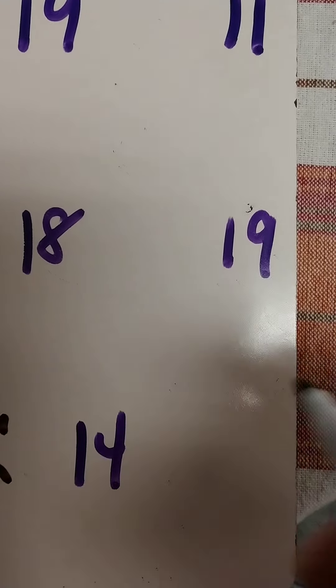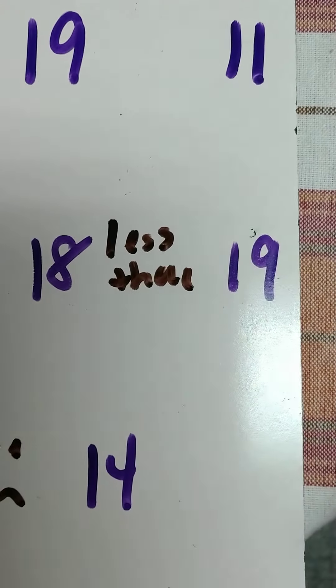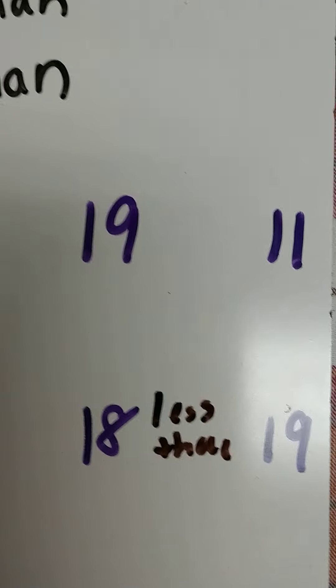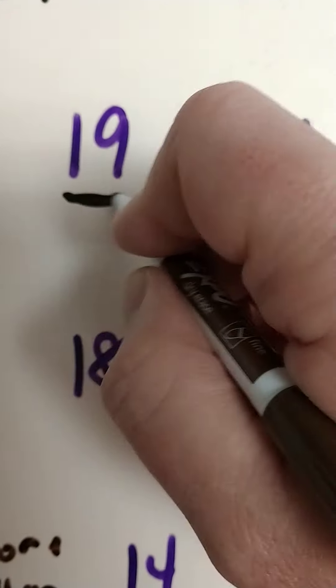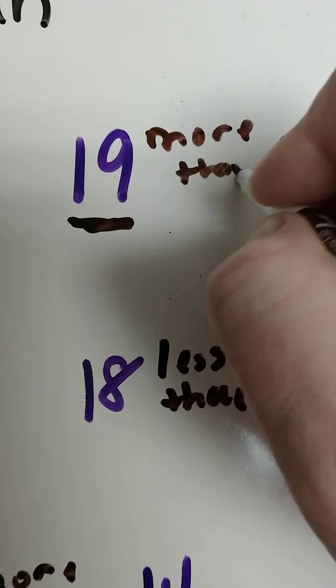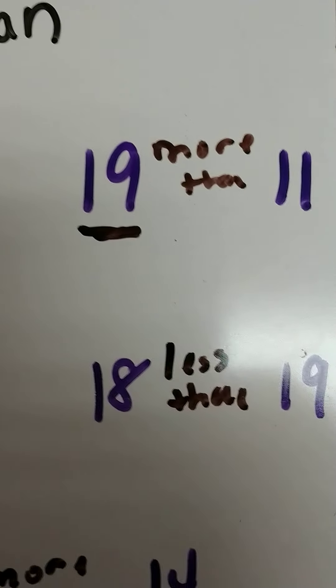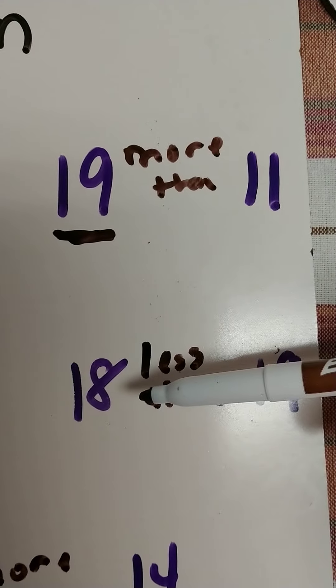18 and 19. 18 is the smaller number, so 18 is less than 19. 19 and 11. 19 is the bigger number, so we write 19 is more than 11. So more means the bigger number's first, less means the bigger number's second.